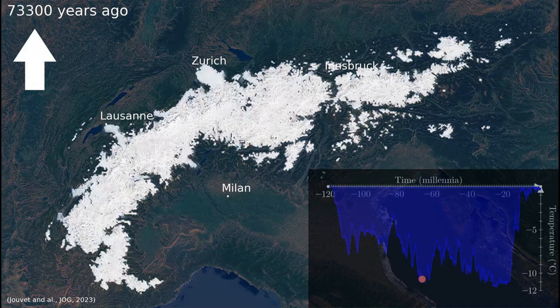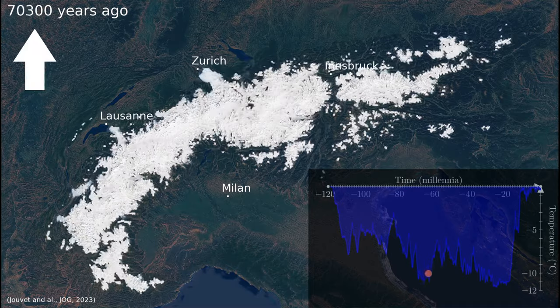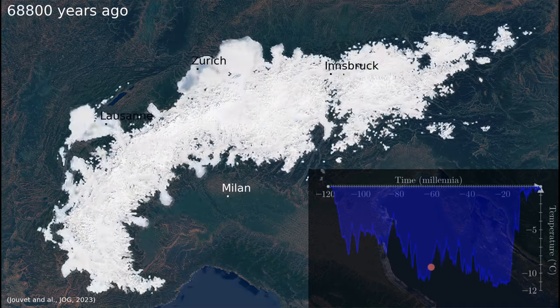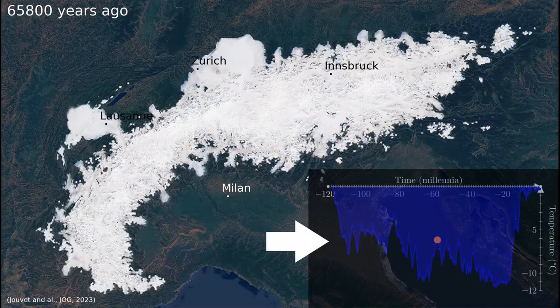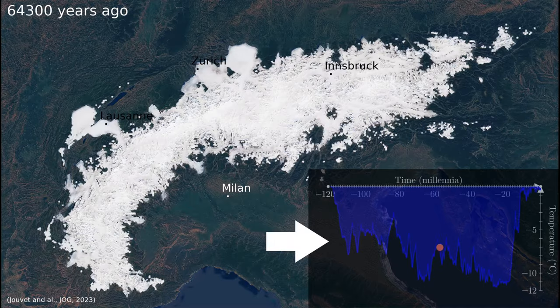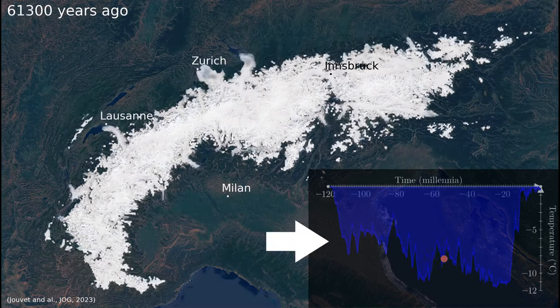You can see the time running at a speed of 1.5 millennium per second. The blue curve shows the drop in temperature compared to pre-industrial time.